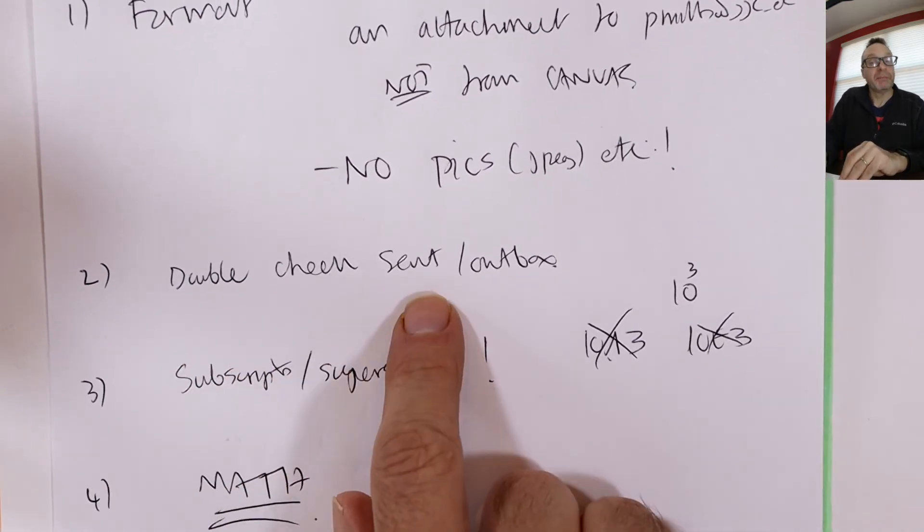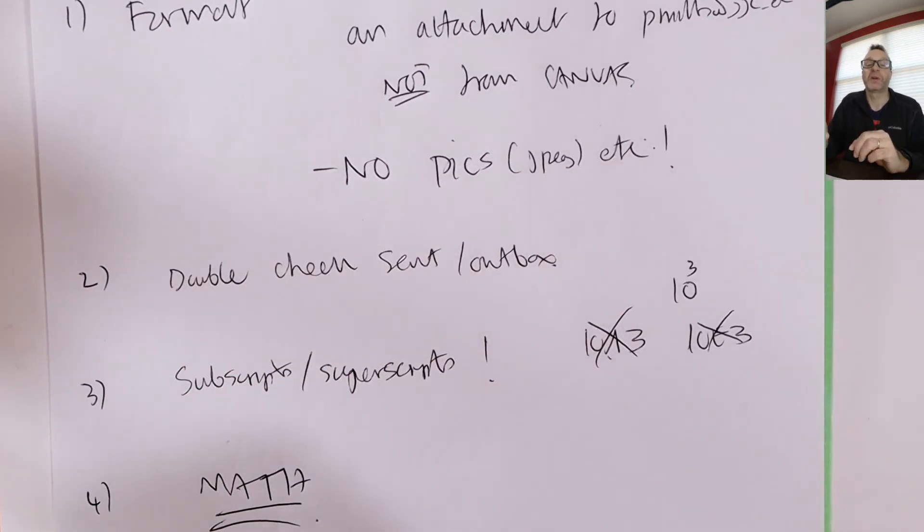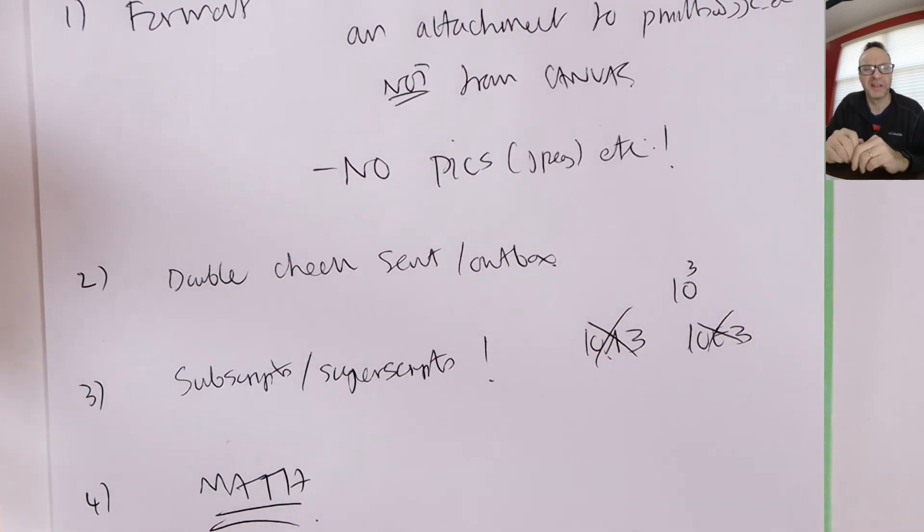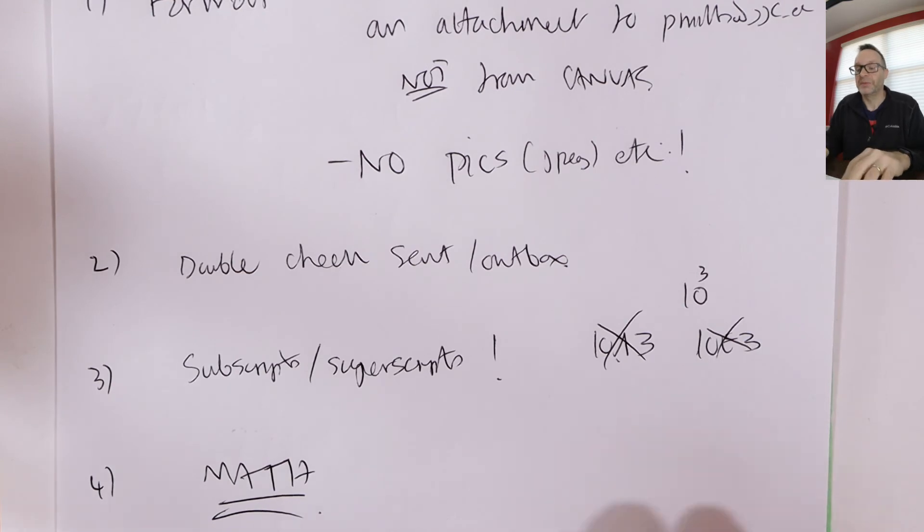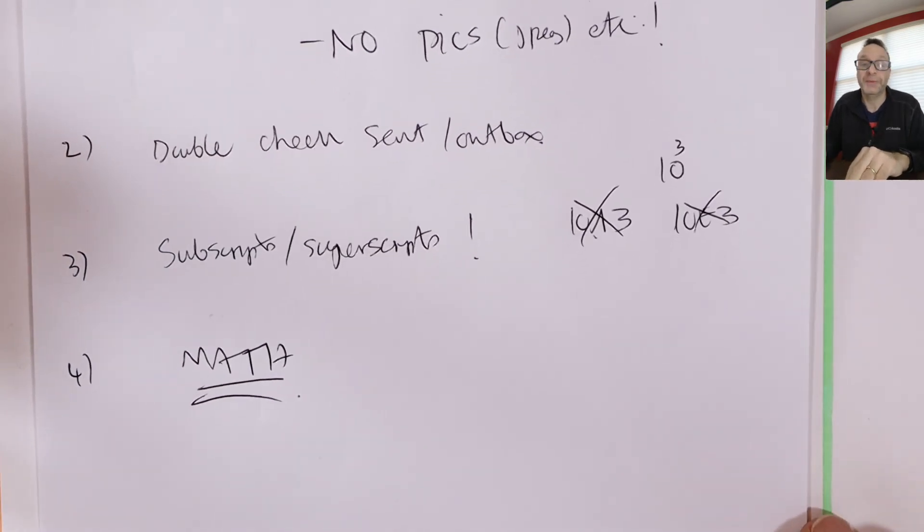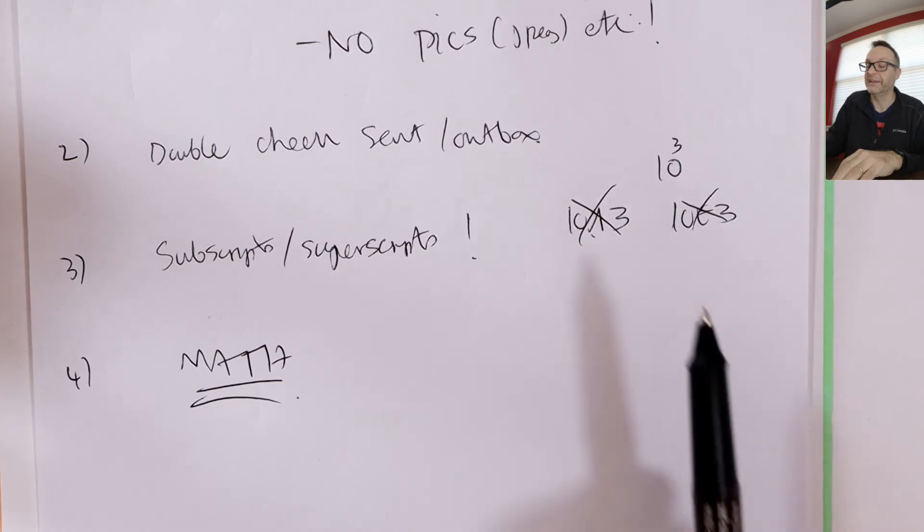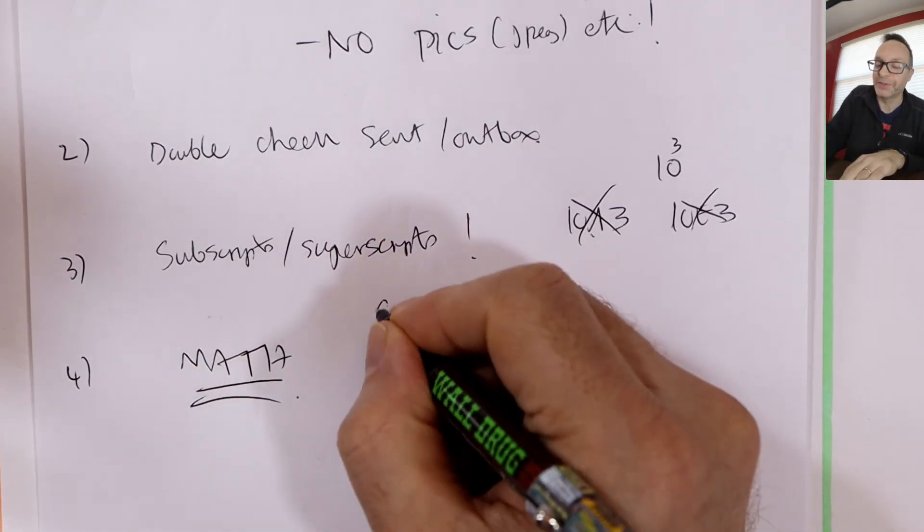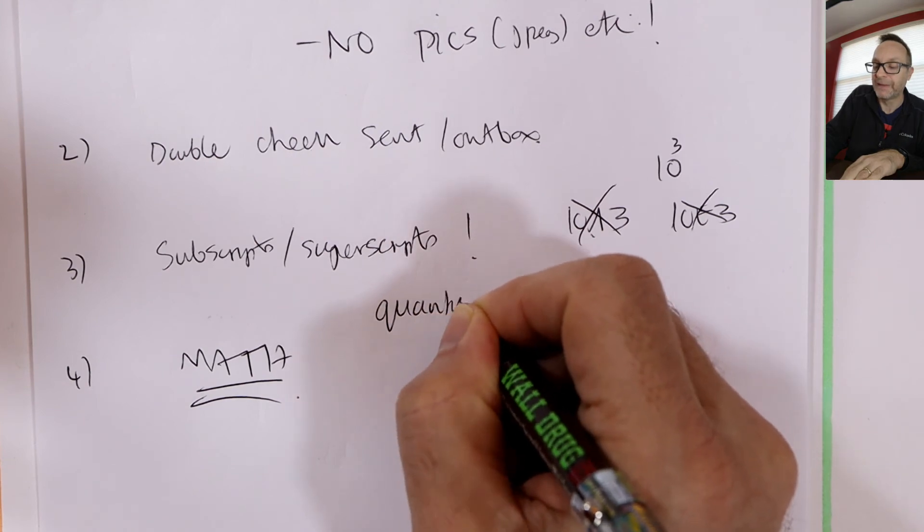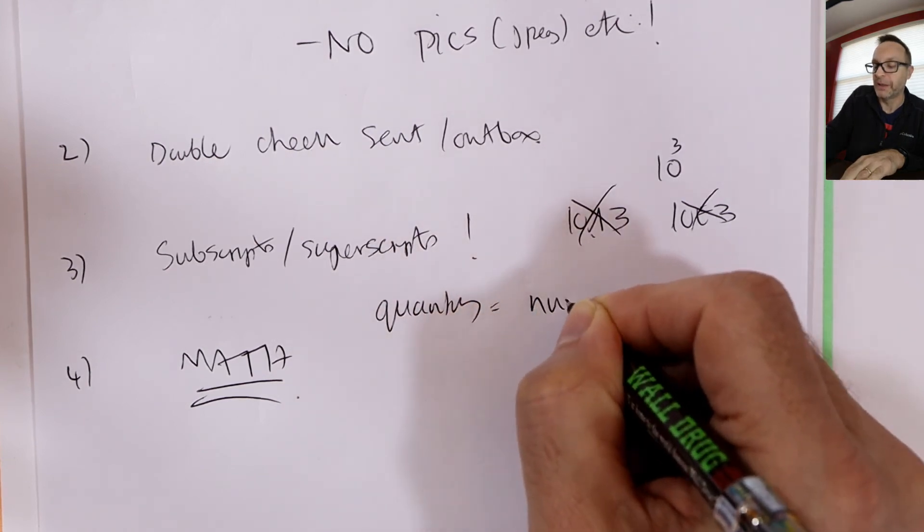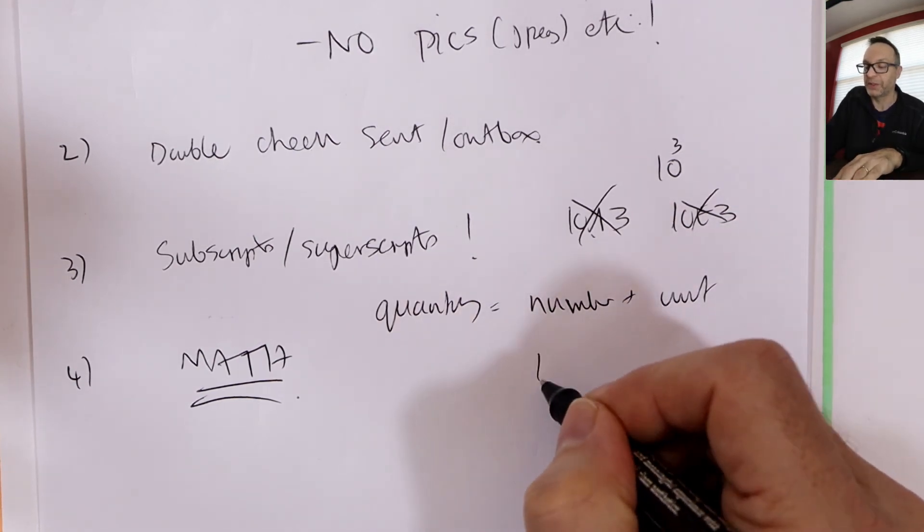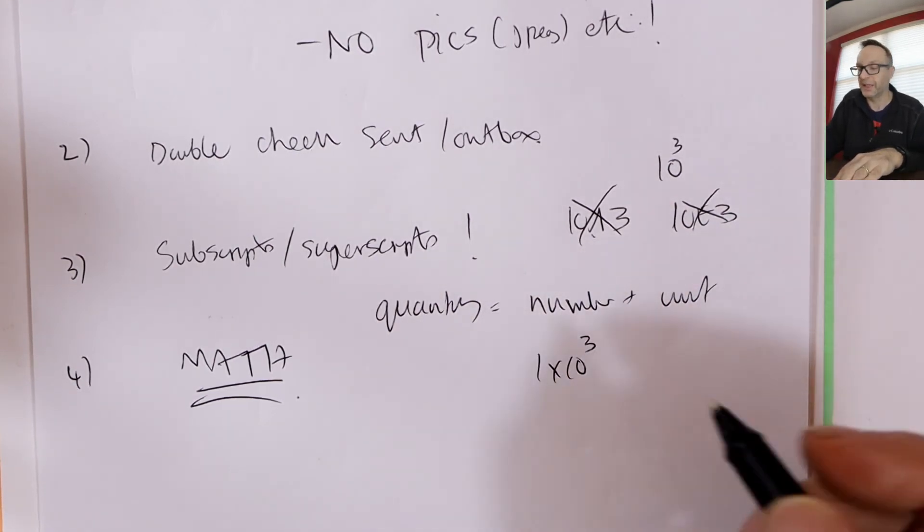All right. Double check your send box. We don't have that situation where I don't get it, and you say you send it, and then we have to do some forensic stuff. That's never fun. Double check your send box. Superscripts, subscripts are essential now. Answers will be graded incorrectly unless they're in the correct format. And remember, also, I should mention this point, quantities equals number and unit. A few of you were still writing just the number part, so 1 times 10 to the 3 doesn't mean anything. 1 times 10 to the 3 meters means something, so number and unit. Always.